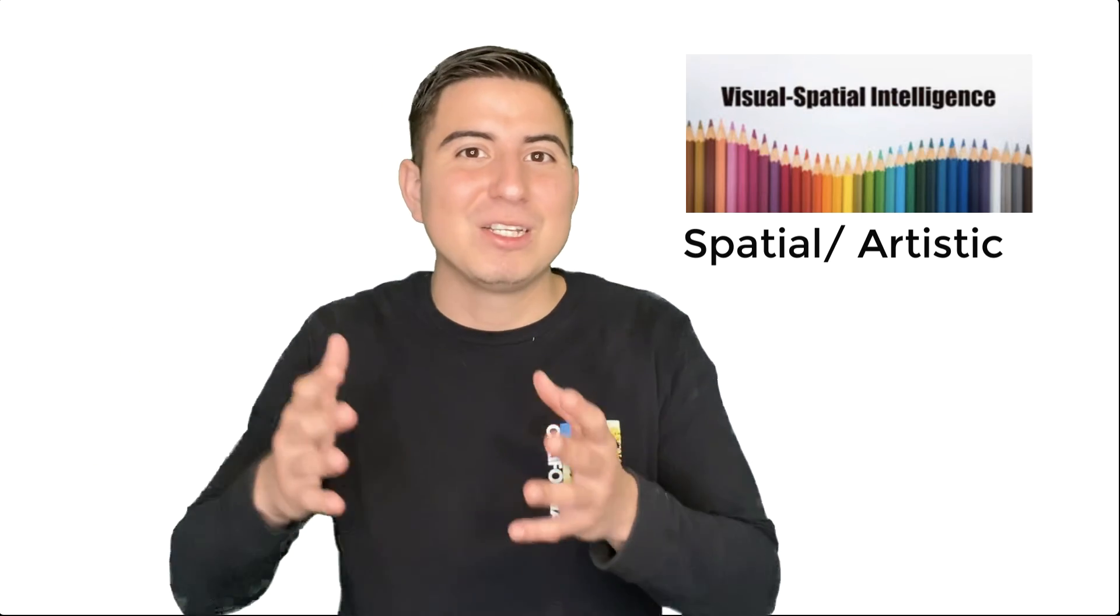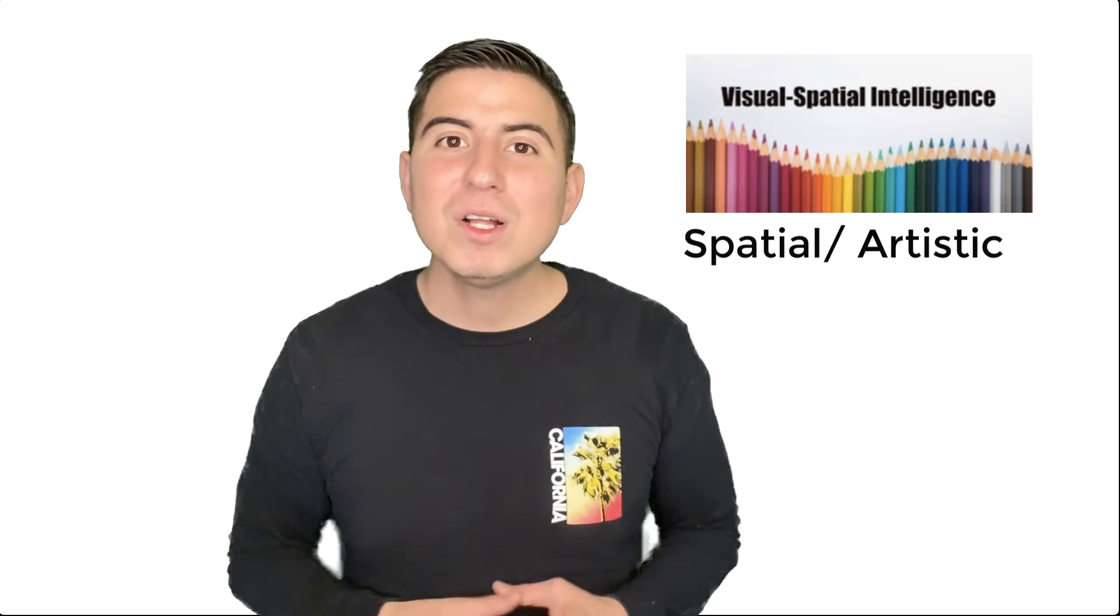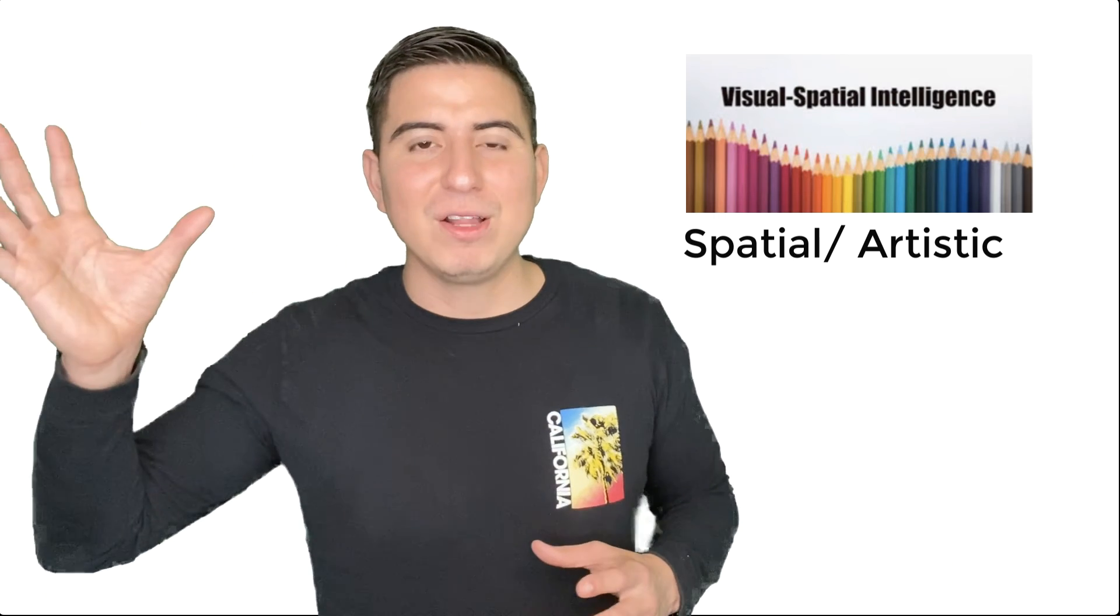Last type of intelligence is the spatial type of intelligence. That person is good at drawing, art, and designing. So if you want to improve the spatial type of intelligence, you have to start taking classes of art. You have to start learning how to draw. You probably download an app where you can start designing. So you will improve that part of your intelligence, which is the creativity part.